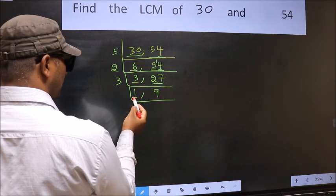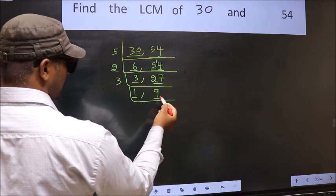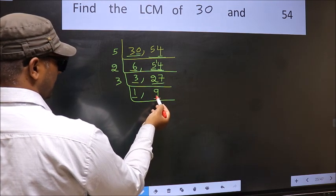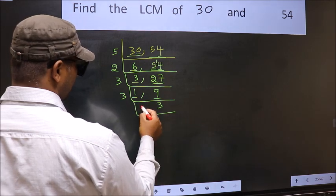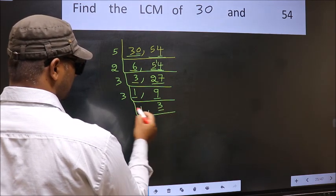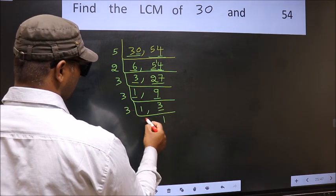Now we got 1 here, so focus on the other number 9. 9 is 3, 3 is 9. Now we have 3. 3 is a prime number, so 3, 1 is 3.